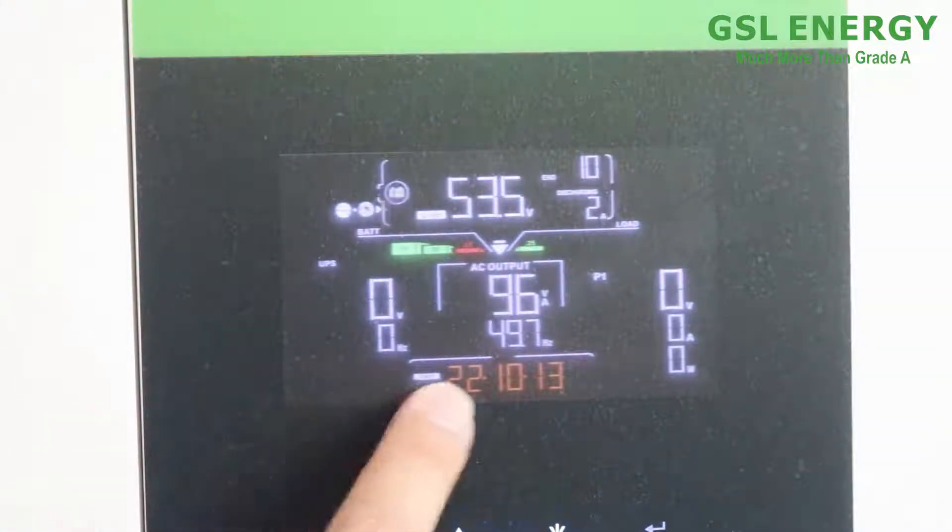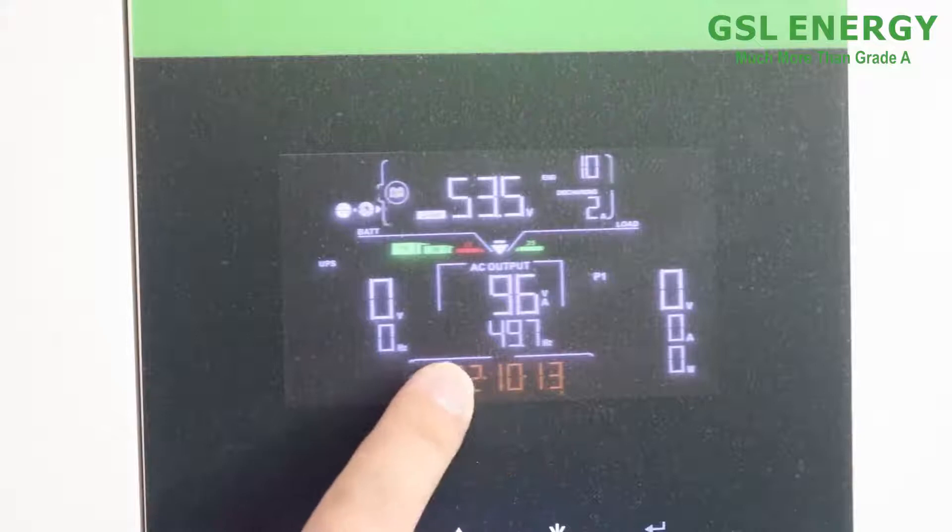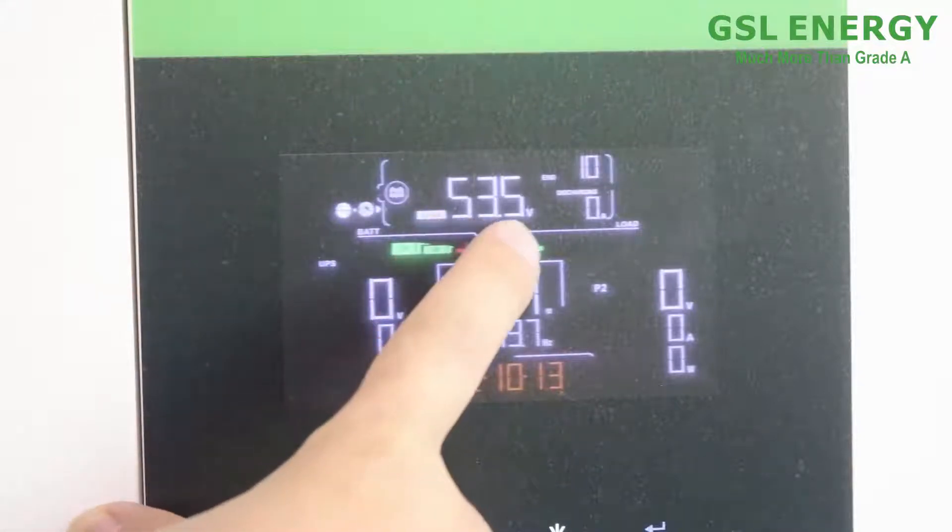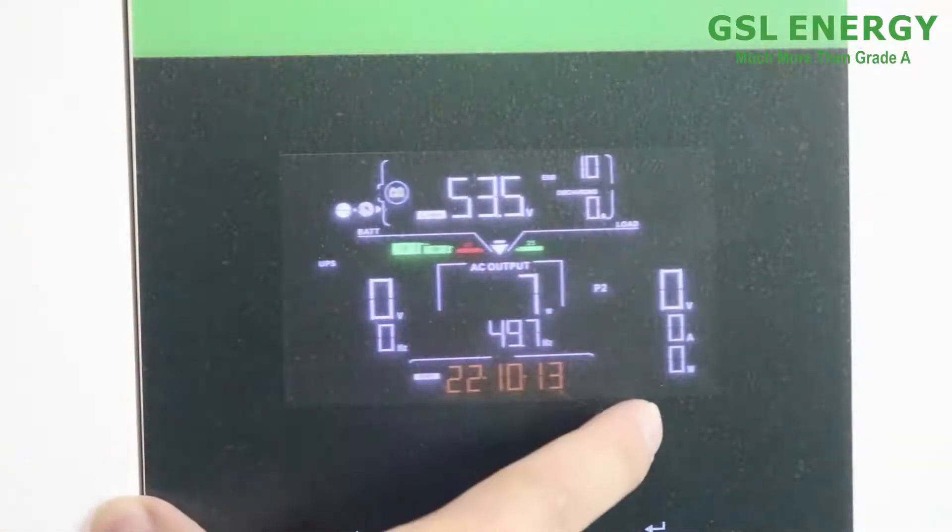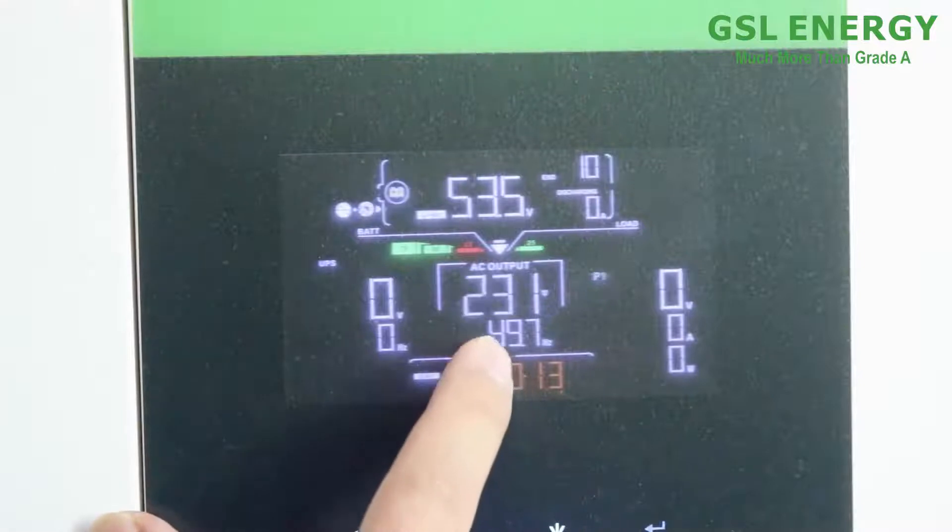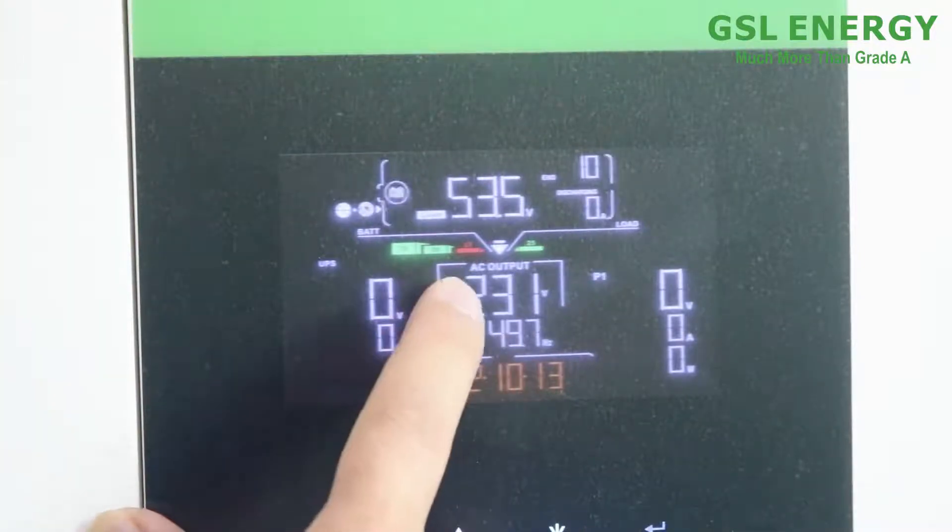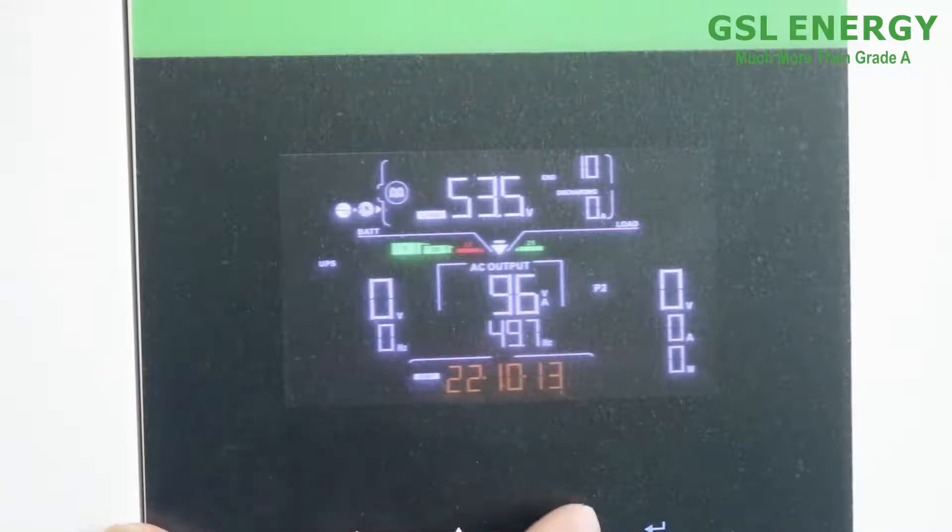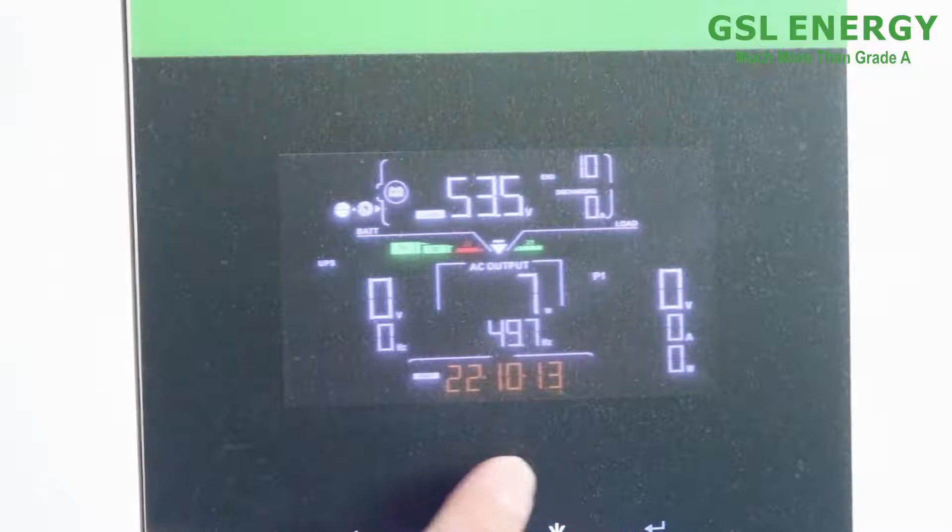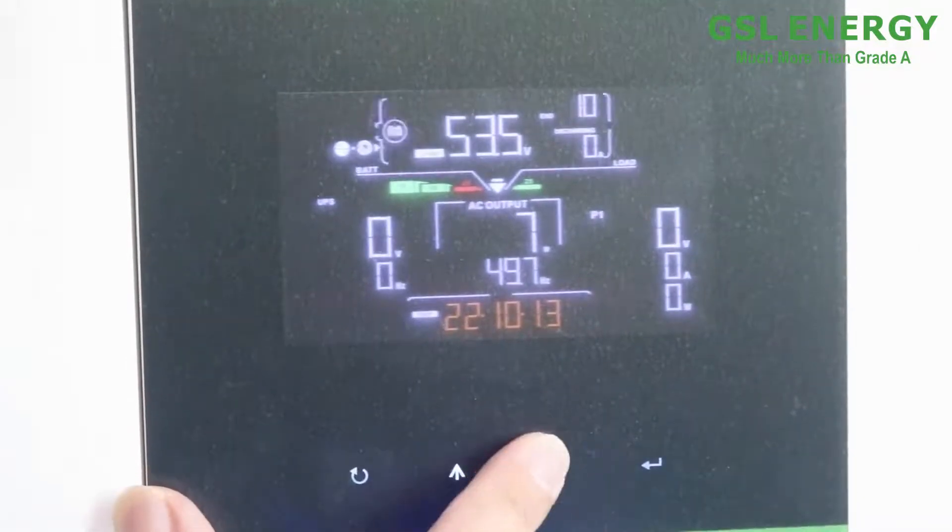And for here is for the time sewing, it's battery voltage, it's for the current. And for here is grid and the grid voltage and the frequency information. We can use the up and down to adjust to see the more information.